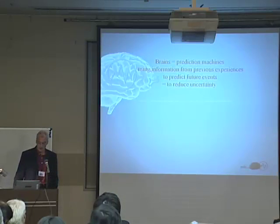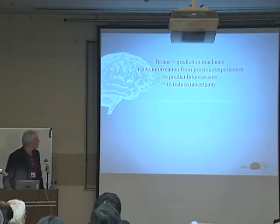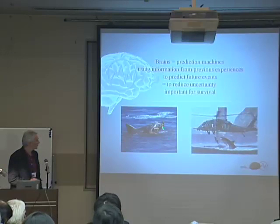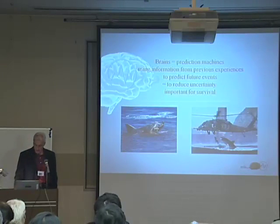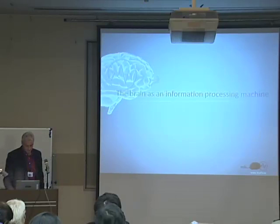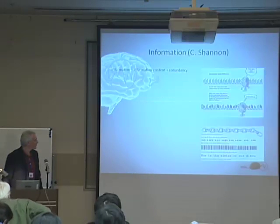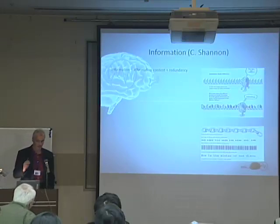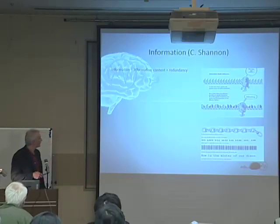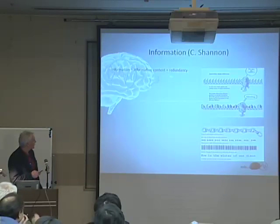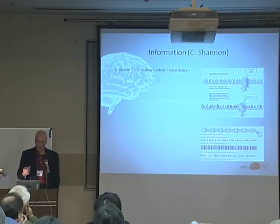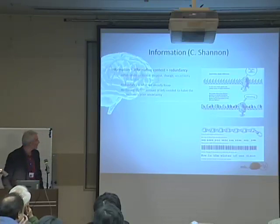Ultimately, this is to reduce uncertainty coming from the changing environment, and that's important for survival. The brain has to be processing information, and information consists of the content of information and a certain amount of redundancy, which you also see in the brain.